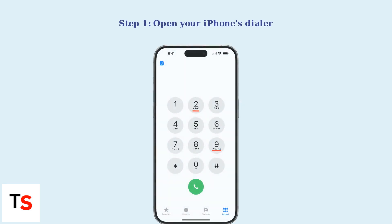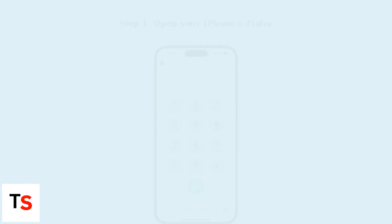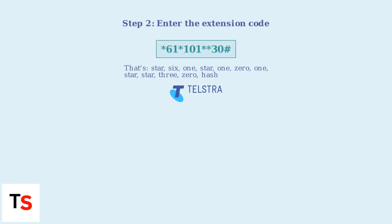First, open your iPhone's phone app and tap the keypad to access the dialer. Now enter the code: star six one star one zero one star star three zero hash. This USSD code instructs Telstra's network to extend the ring time.